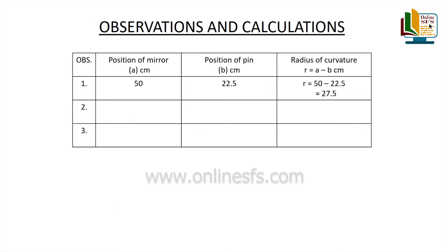Ab r1 se focal length f1 find out karenge with the help of formula f1 equals to r1 upon 2, that is 27.5 divided by 2 equals to 13.75 cm.